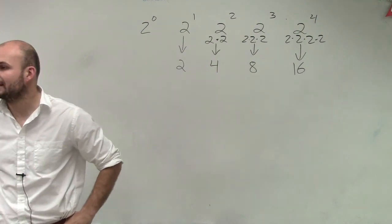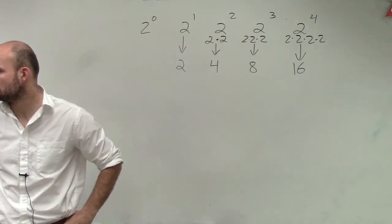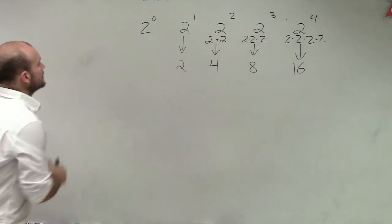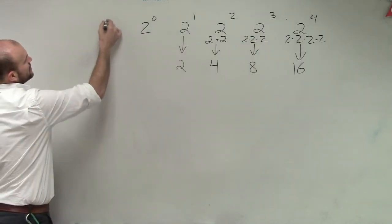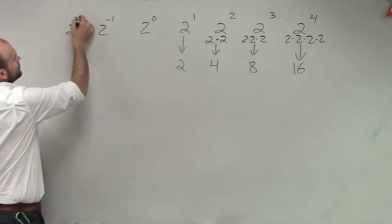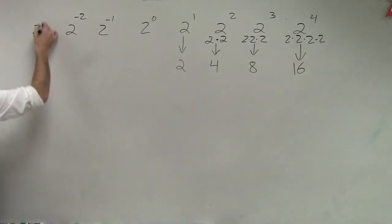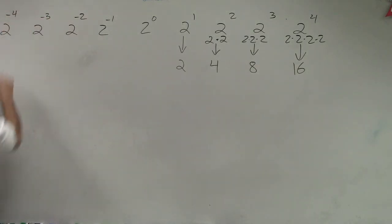Now let's go over to the negative numbers. 2 to the negative first, 2 negative squared, 2 negative cubed, and 2 to the negative fourth.